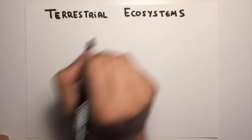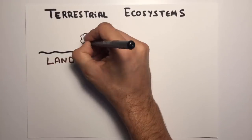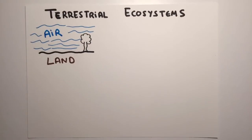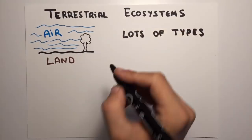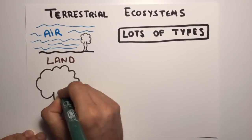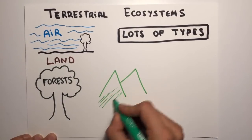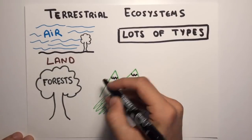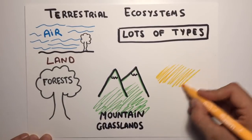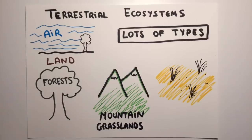Terrestrial ecosystems are located on land and are surrounded by air. There are different types of terrestrial ecosystems. Some examples are forests, mountain grasslands, deserts and steppes.